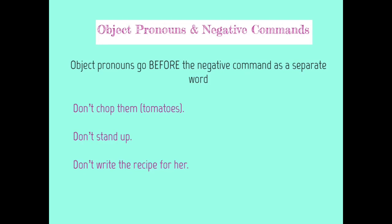The last thing we need to cover is what to do with object pronouns in relation to negative commands. By object pronouns, I mean direct object pronouns (DOPs), indirect object pronouns (IOPs), or reflexive pronouns like me, te, se, nos, os, or se. The rule for all negative commands is you must put the pronoun before the negative command as a separate word.